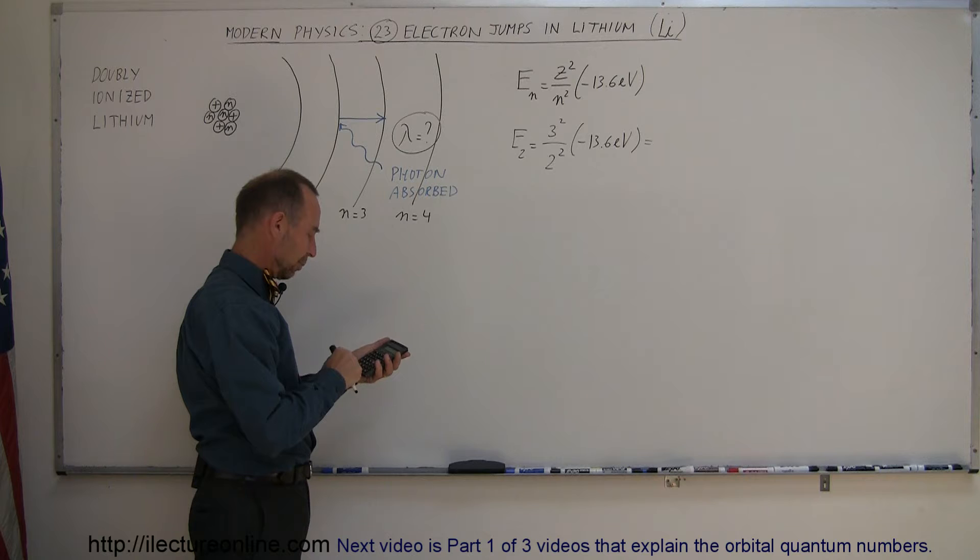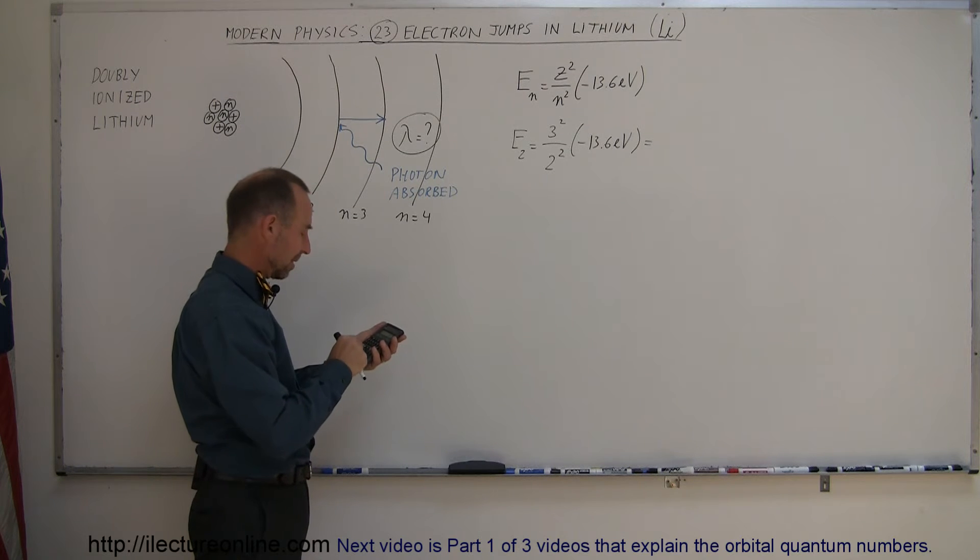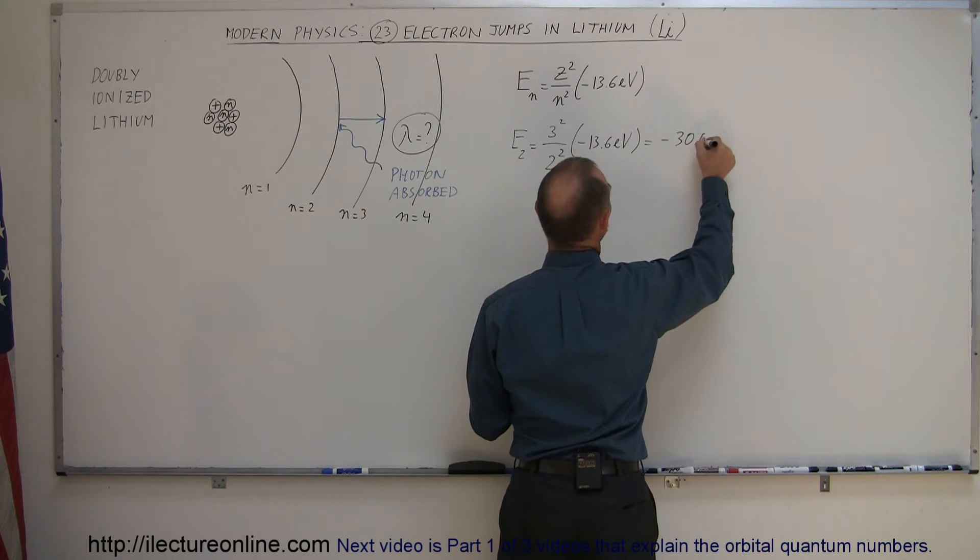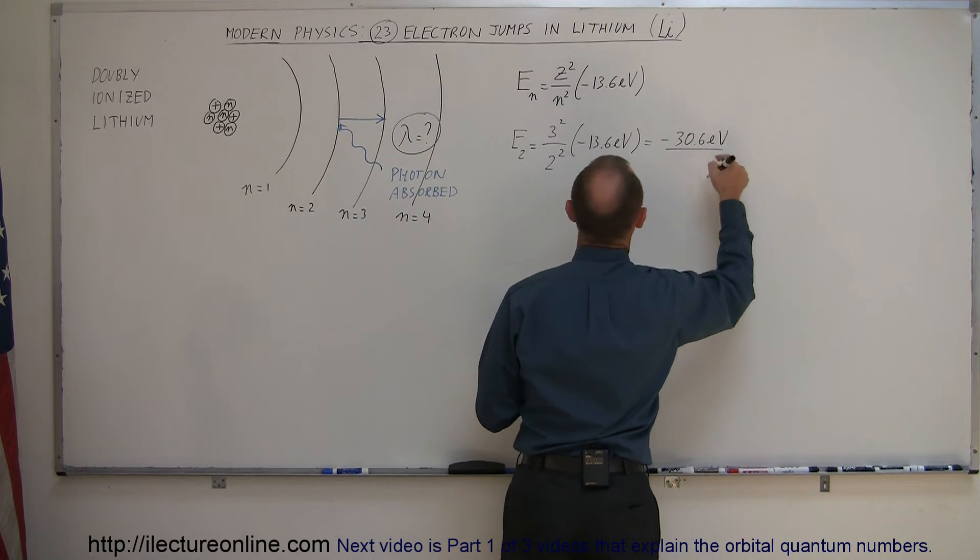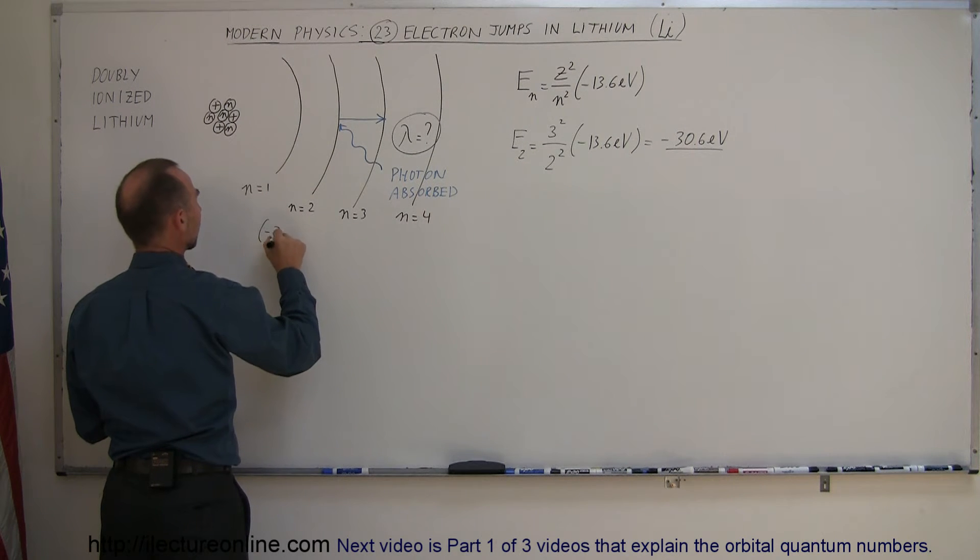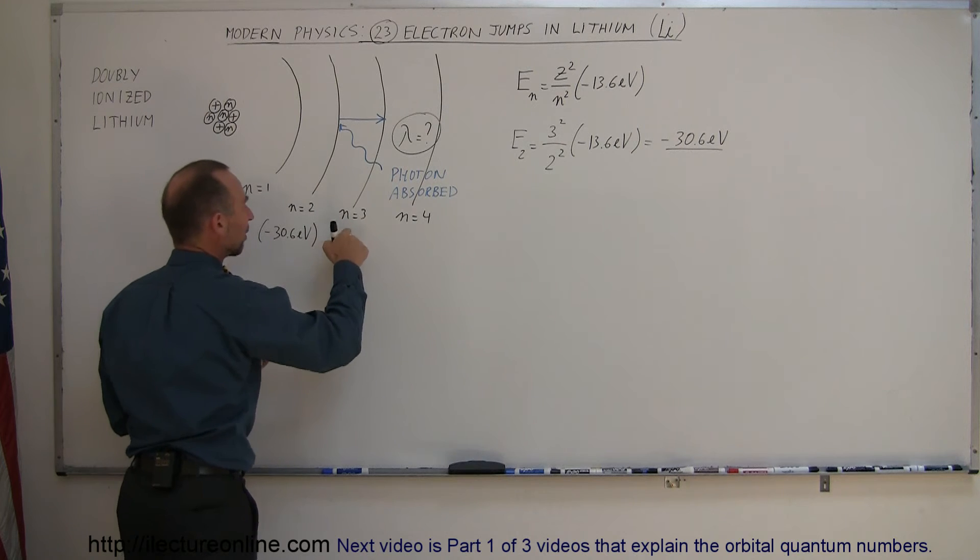So, we have 13.6 times 9 divided by 4 equals minus 30.6 electron volts. That's the energy level of the second level, minus 30.6 electron volts.